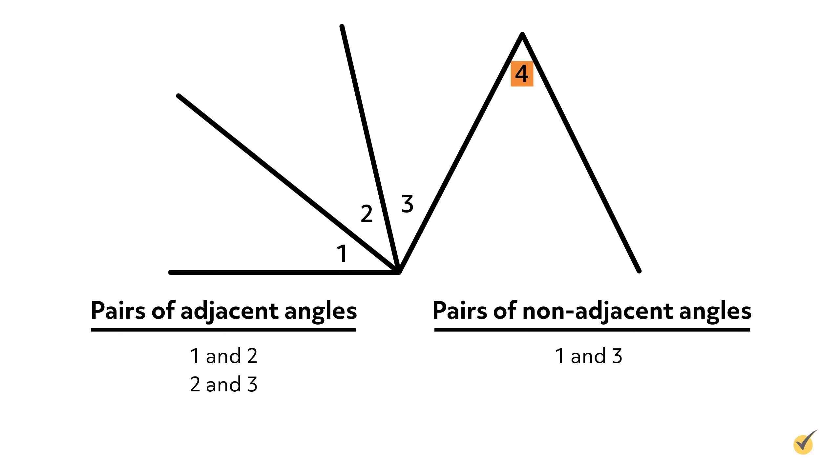Let's now consider angle 4. Is it adjacent to any of the other angles? While it does share a common side with angle 3, they do not have the same vertex. For this reason, angles 3 and 4 are not adjacent.